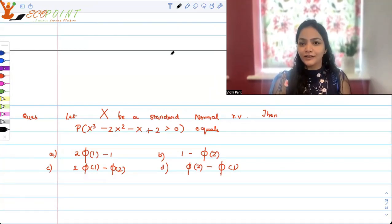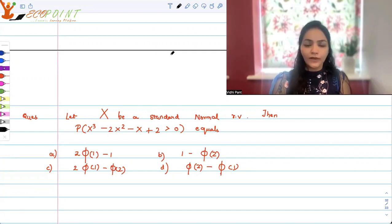Hey guys, welcome to another video. Today's question is: let X be a standard normal random variable, then the probability X³ - 2X² - X + 2 > 0 equals to twice of phi(1) - 1, 1 - phi(2), 2 times phi(1) - phi(2), or is it phi(2) - phi(1)?